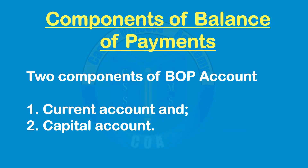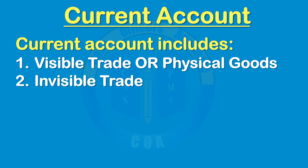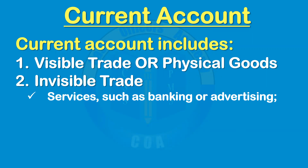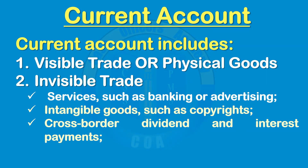There are two components of Balance of Payments: current account and capital account. The current account includes visible trade, or physical goods — for example, if a country is exporting cars, that comes under tangible goods. The other component is invisible trade, which includes export of services such as banking services and advertising services. For example, if banks are providing international credit, that results in a flow of foreign exchange. This also includes other intangible goods like copyrights, as well as dividends and interest payments crossing the country's borders.